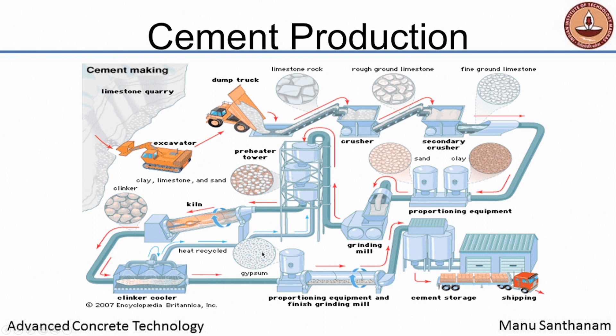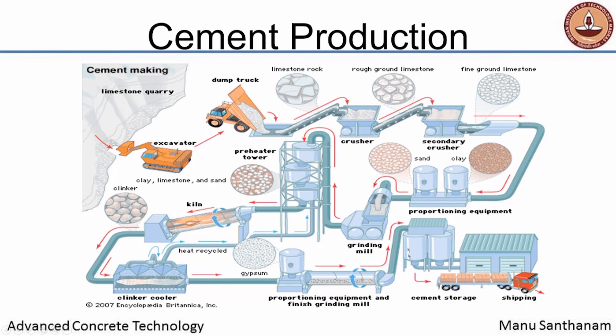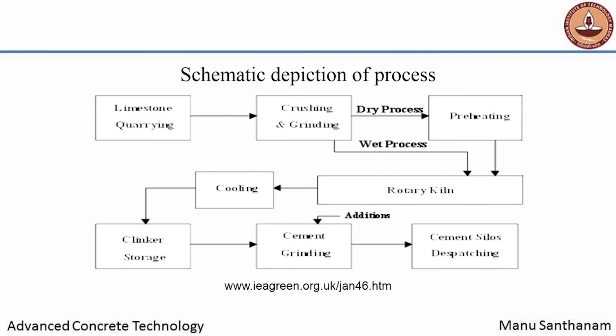Beyond clinker cooling, the material is then proportioned with gypsum in the final stages and sent to the grinding equipment. In the past, people used ball mills, but today more efficient grinding units are available. A ball mill is quite simple — it is a rotating cylinder with very heavy steel balls inside. You put in your cement clinker and gypsum; the steel balls collide and impact against each other, crushing the clinker and gypsum together while also blending them simultaneously. From here the material goes into temporary storage, then to the packing facility to be sent out either in bags or in bulkers. This is the overall layout of the cement production process.